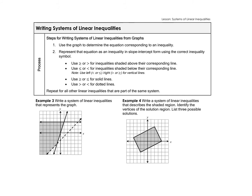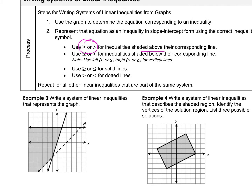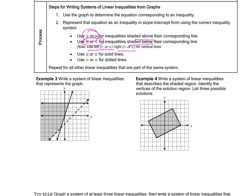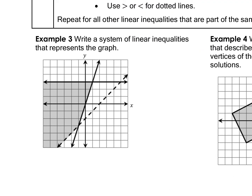Now we're writing systems of linear inequalities from a graph. You use the graph to determine the equation corresponding to each inequality and represent it in slope-intercept form. If shading is above, it's greater than; below is less than. For vertical lines, left is less than and right is greater than. Dotted lines are not equal; solid lines include equal to.